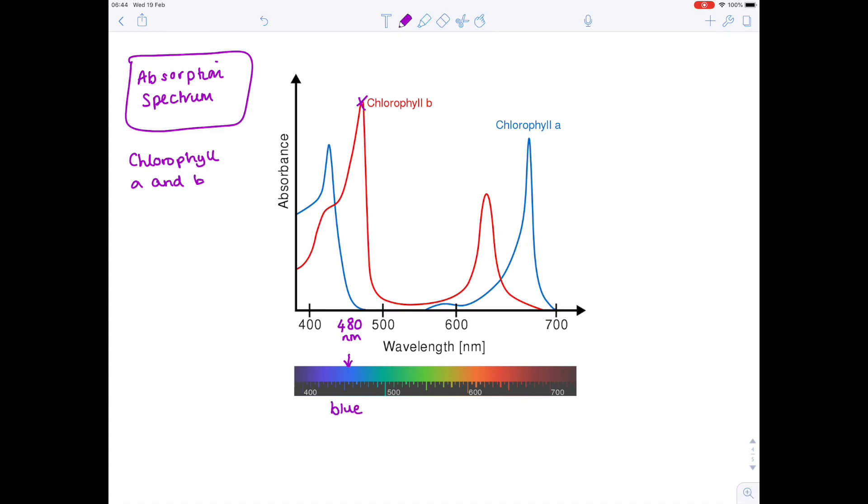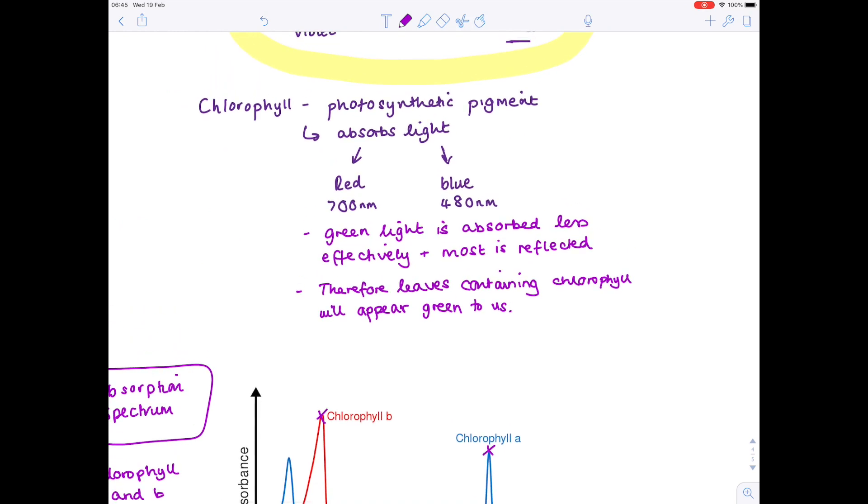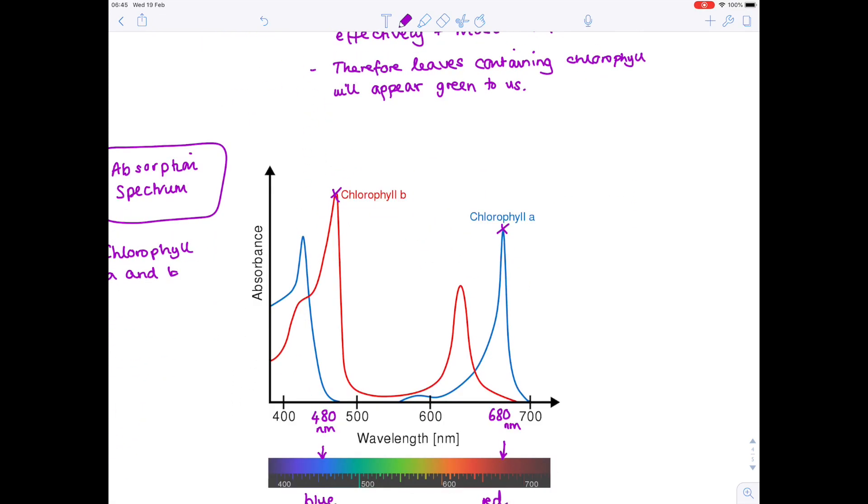For chlorophyll A, let's look again. We can see that this is the peak for chlorophyll A. Reading down, we can see that it occurs around 680 nanometers. These are just approximations, by the way. But again, looking at the useful diagram, we can see that that is red light, which actually backs up what we were saying, that red and blue light absorb most effectively, green light is absorbed less effectively, which is why most plants appear green.